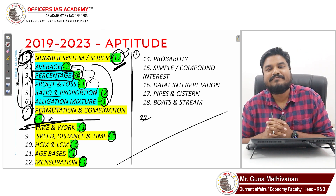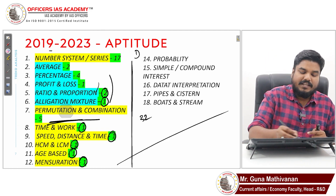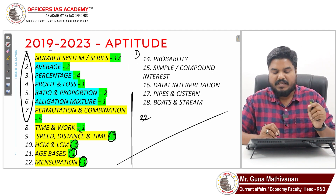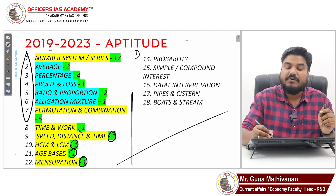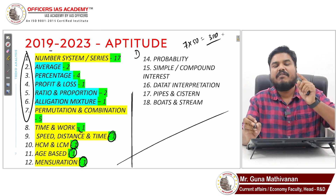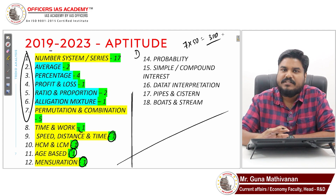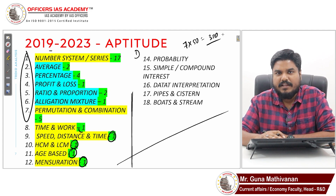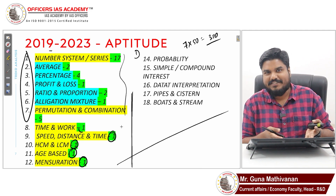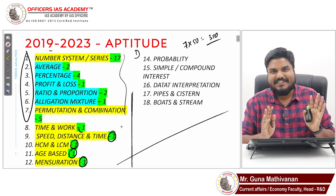So the recommended seven chapters are: number systems, percentage (covering averages, profit and loss, ratio proportion, allegation mixture), and permutation and combination. From these seven chapters you can manage about 32 questions. Do at least 50 questions per chapter — that's 350 questions total — and you will master those chapters. Minimum 350 questions is what I want you to solve.